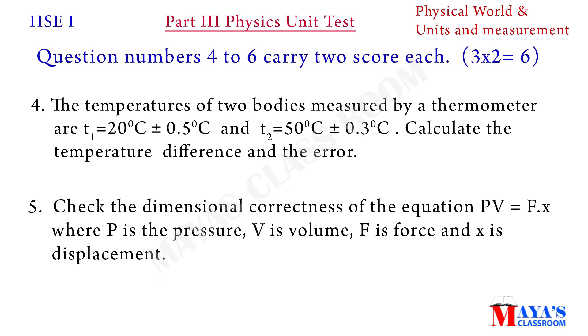Next section, question numbers four to six carry two score each. Fourth question: the temperatures of two bodies measured by a thermometer are T1 equals 20 degrees Celsius plus or minus 0.5 degrees Celsius, and T2 equals 50 degrees Celsius plus or minus 0.3 degrees Celsius. Calculate the temperature difference and the error. Fifth question: check the dimensional correctness of the equation PV equals F into X, where P is the pressure, V is the volume, F is force, and X is displacement.